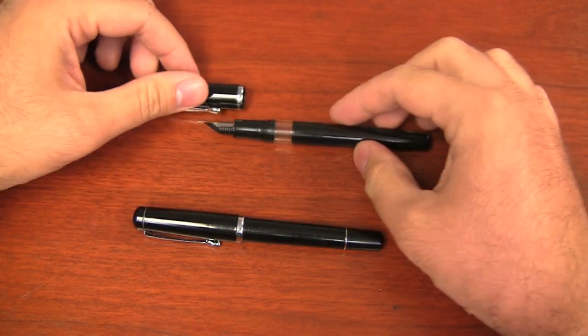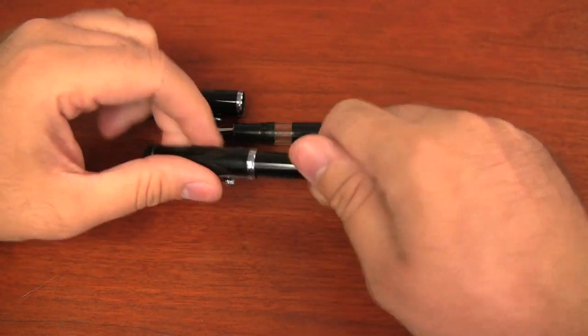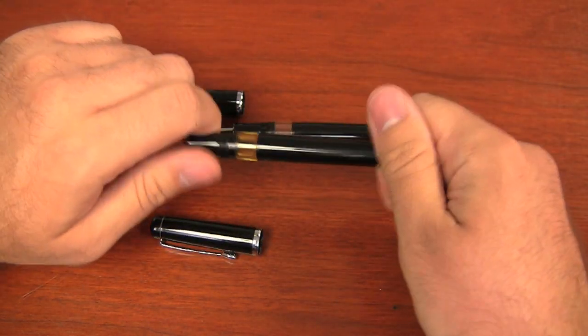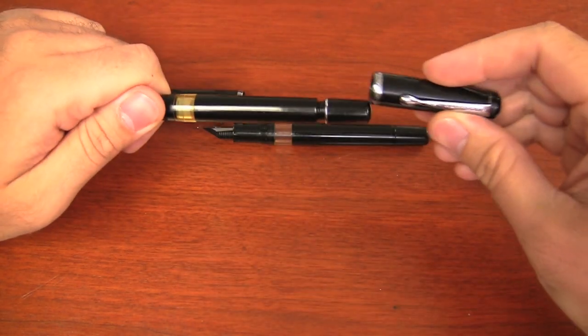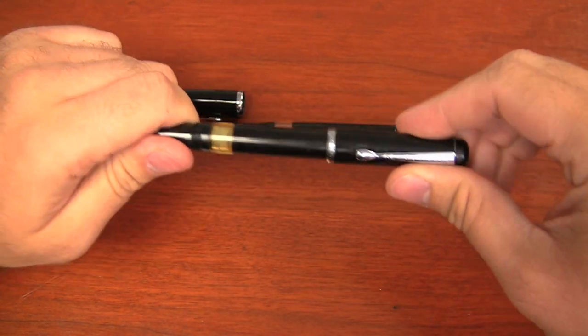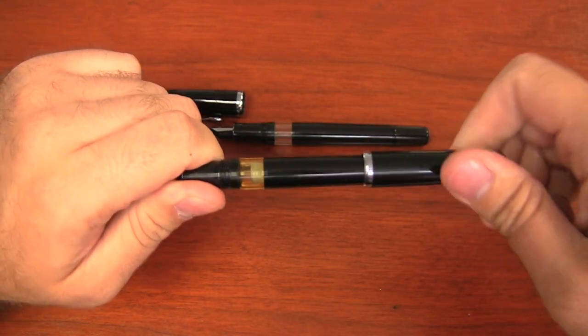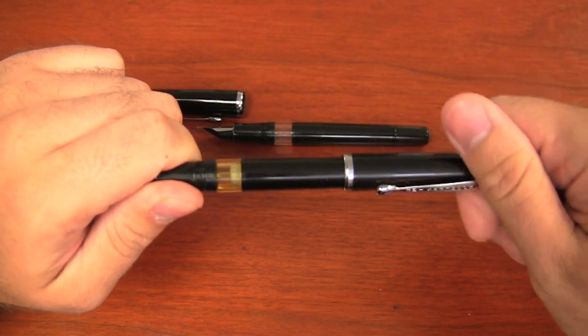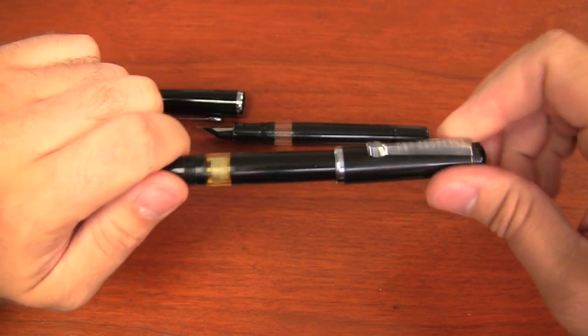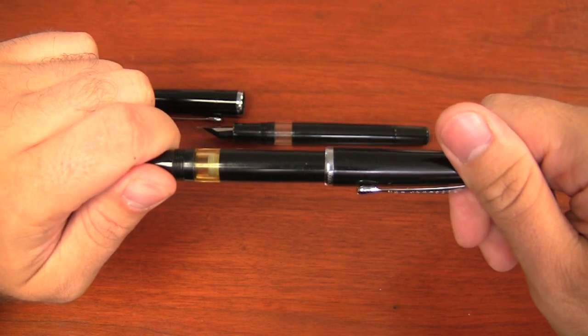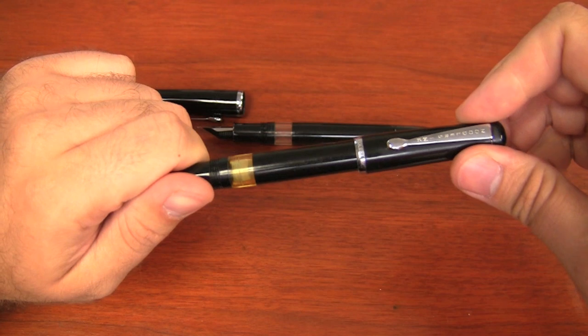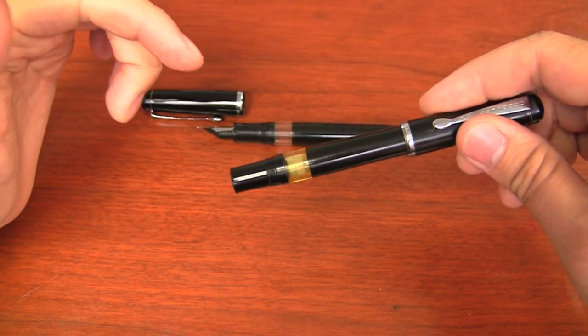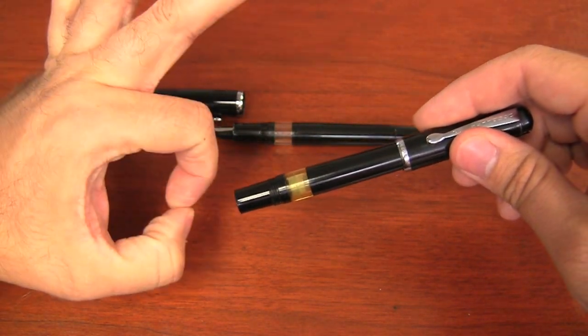Not only because the piston mechanism inside is different, but because with the old version, one of the problems that you had was that when you posted the pen, you could twist the cap and it would move the piston inside. As you can see here through the ink window, that piston is moving up and down. So if you happen to be writing with it and either your hand moved it or you bumped it or something, it could move the piston and shoot ink out of the pen. Not exactly ideal.